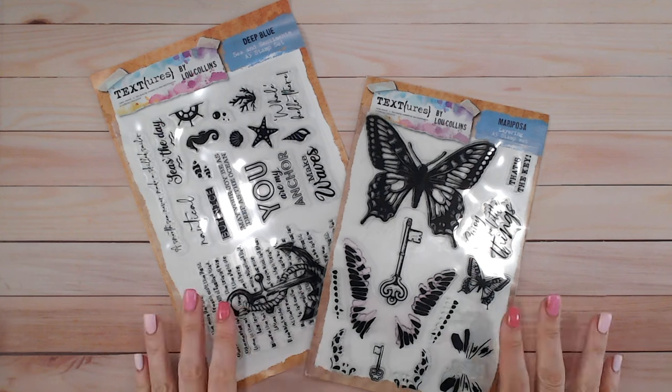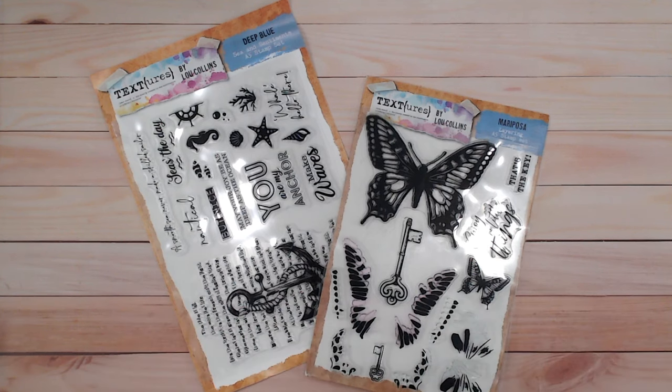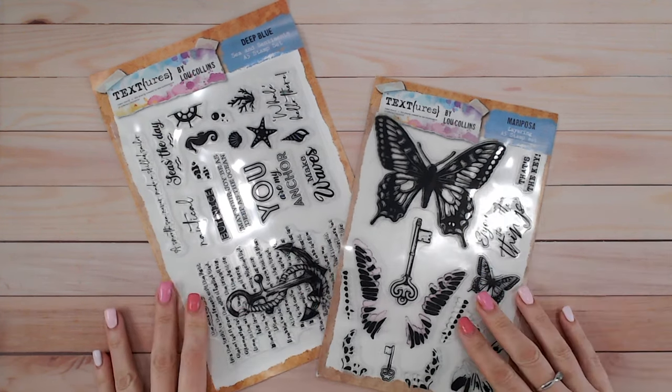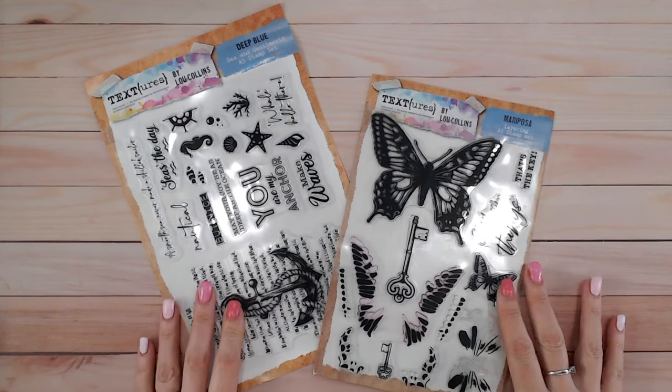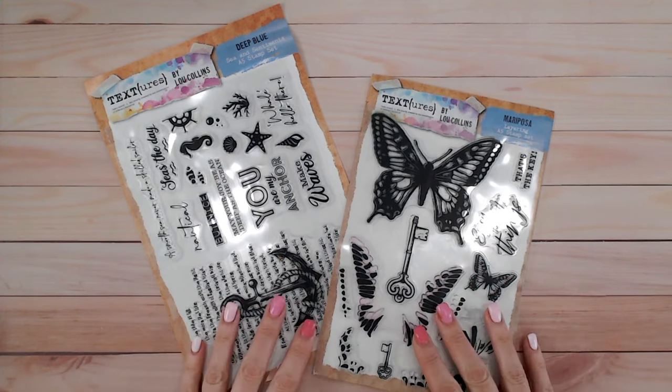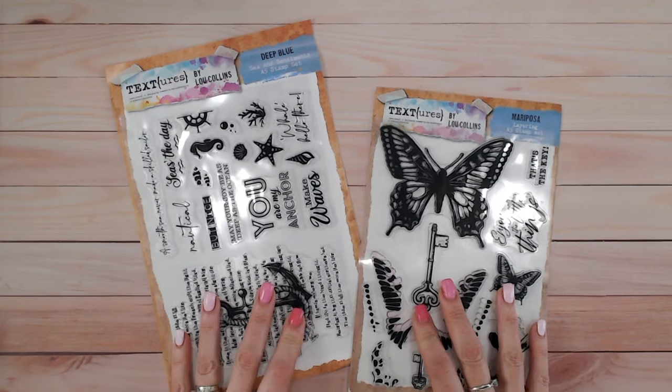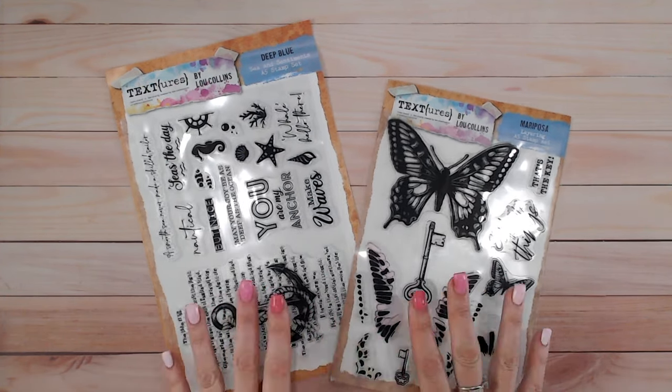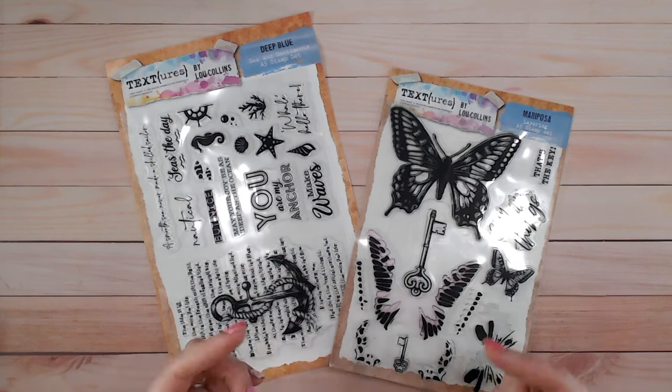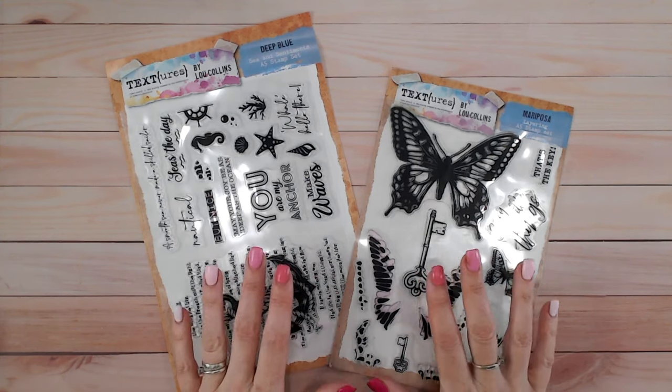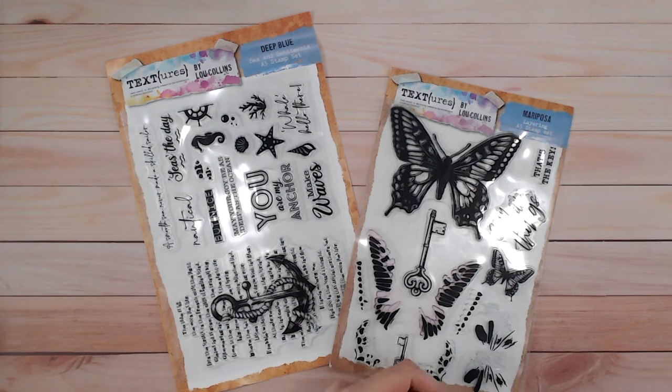Hi everyone, it's Lou Collins. Today I'd like to show you three different stamping techniques that you may or may not have heard of or may have forgotten about, and they're great for stretching the use of your clear stamps. I'm going to be using mostly Textures range of stamps. You can find everything that I'm using linked in the description below, and I would love it if you could give this video a thumbs up and a subscribe. So let's get started with the first technique.